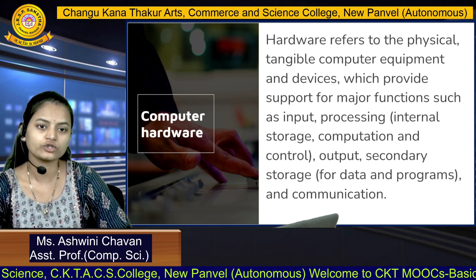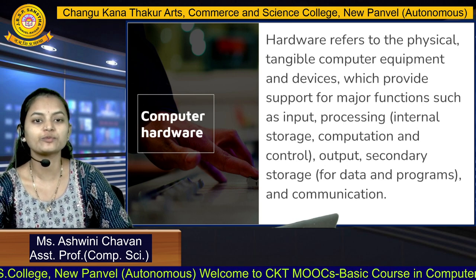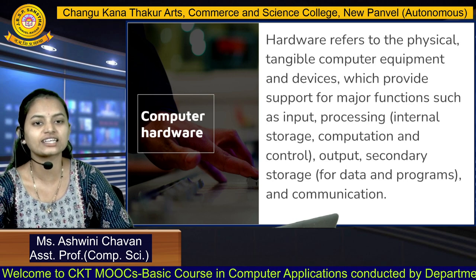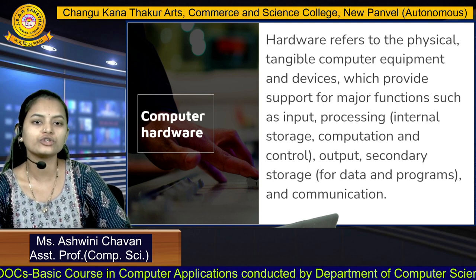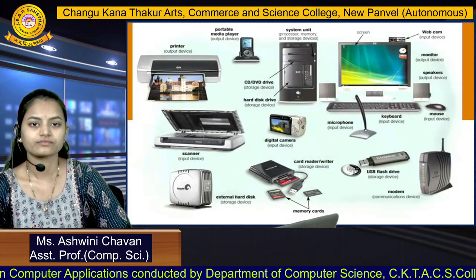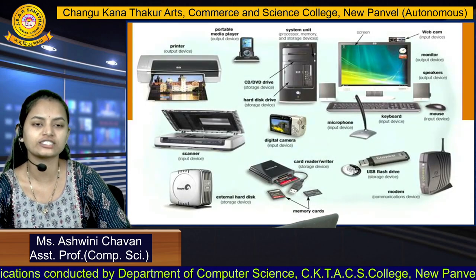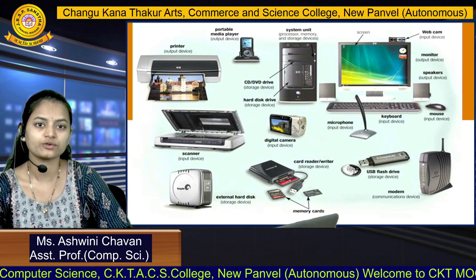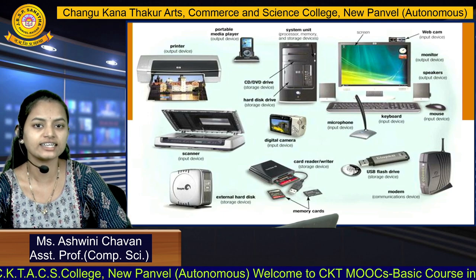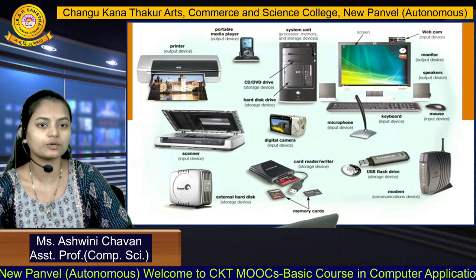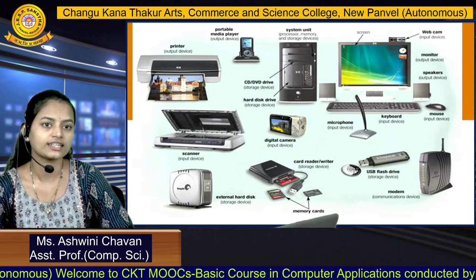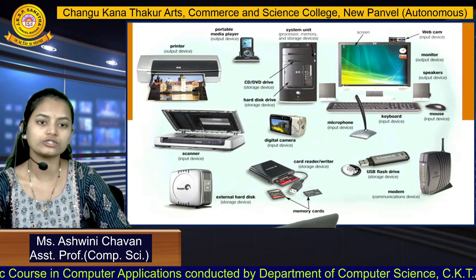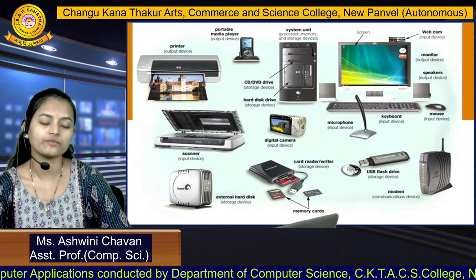After processing, the computer system provides output to the user. There are also secondary storage devices like CD, DVD drives, and pen drives which can be externally attached to store data. Communication devices are also part of computer hardware. In the figure we can see several hardware devices — printer, portable media player, CPU, storage devices like CD/DVD drive and hard disk, a personal computer with monitor, webcam, speakers, keyboard, mouse, microphone, pen drives, card readers, USB flash drives, and a modem.